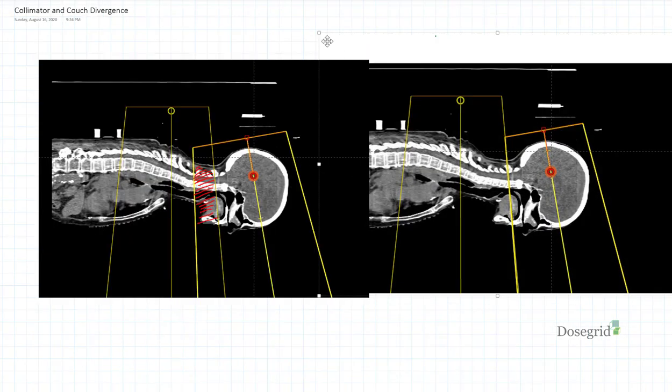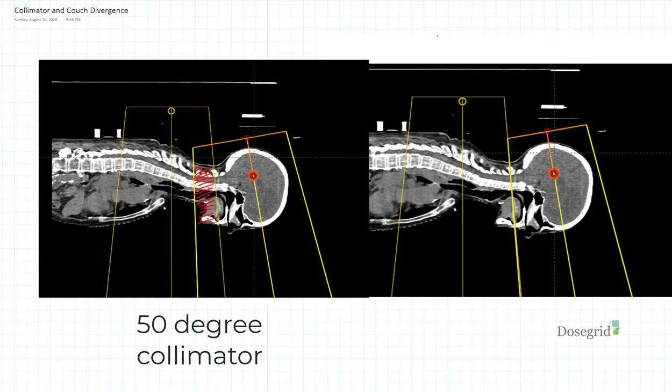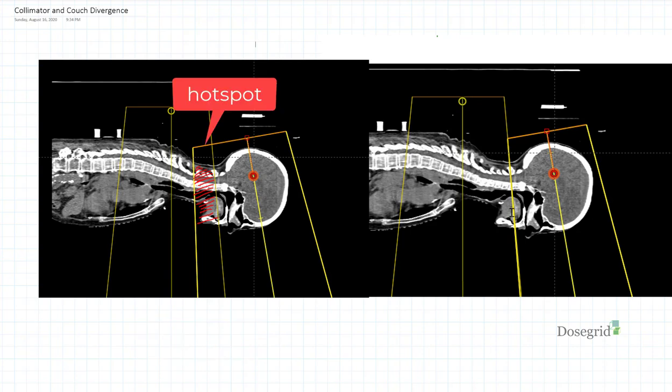In this example, the collimator is improperly set to 50 degrees. The brain fields overlap with the superior spine fields, creating a hotspot in the C-spine.